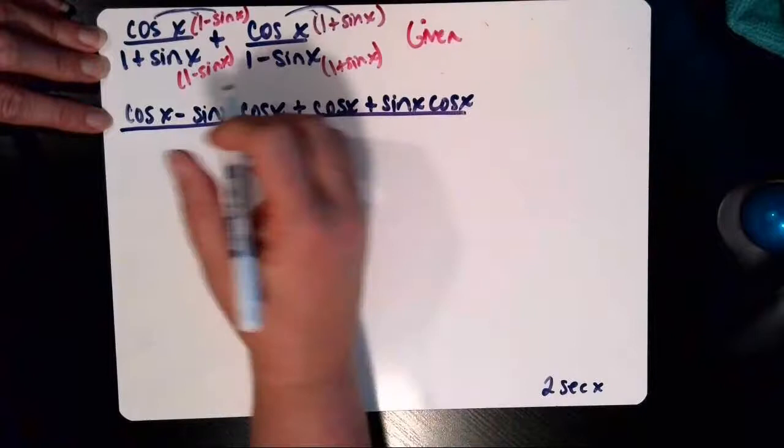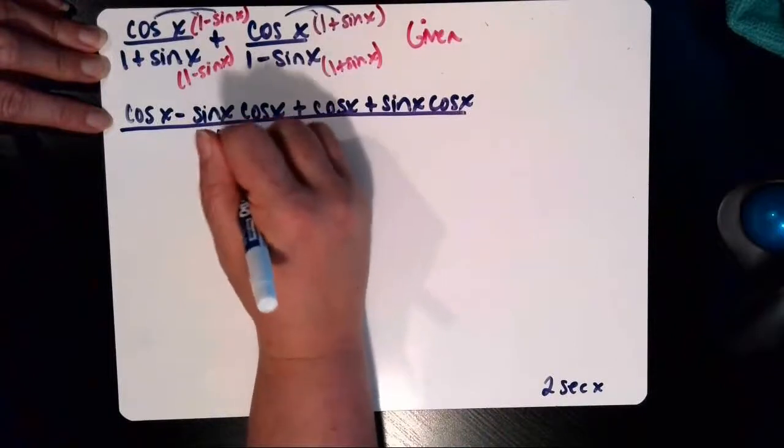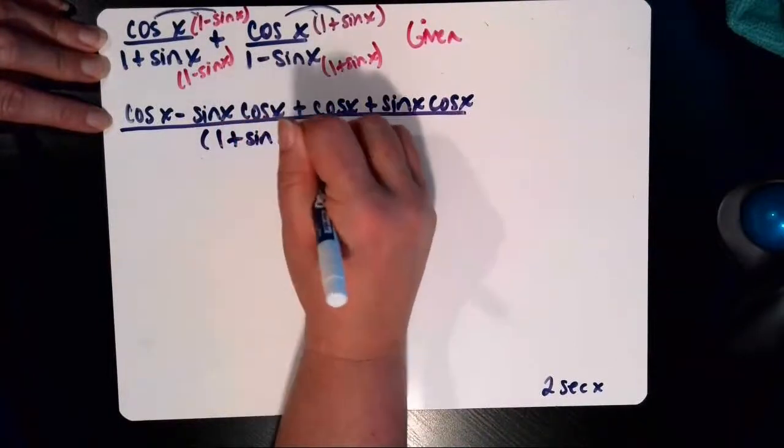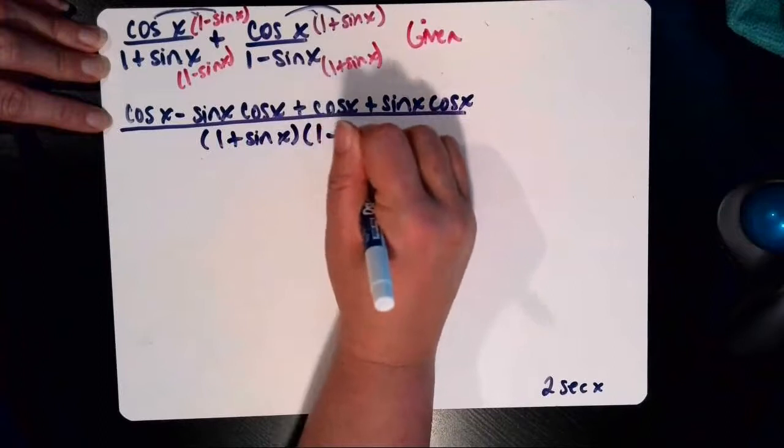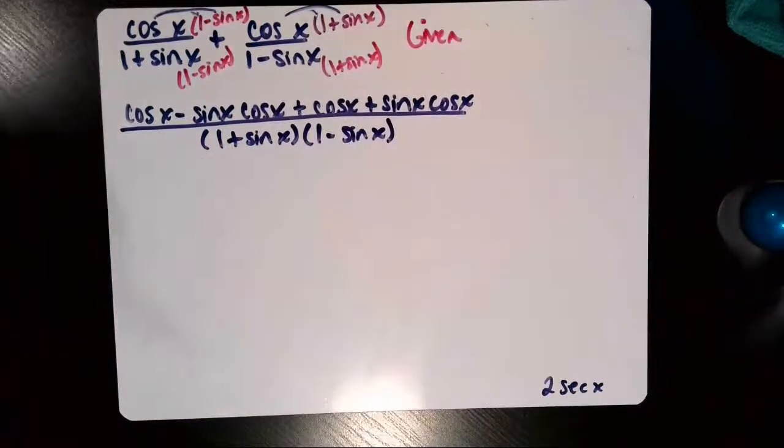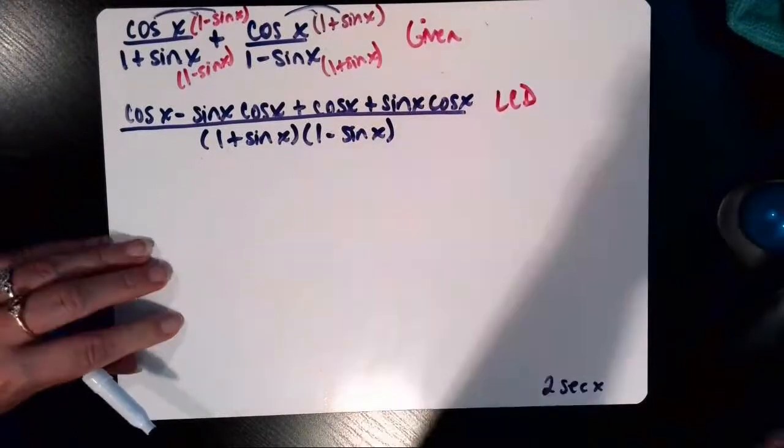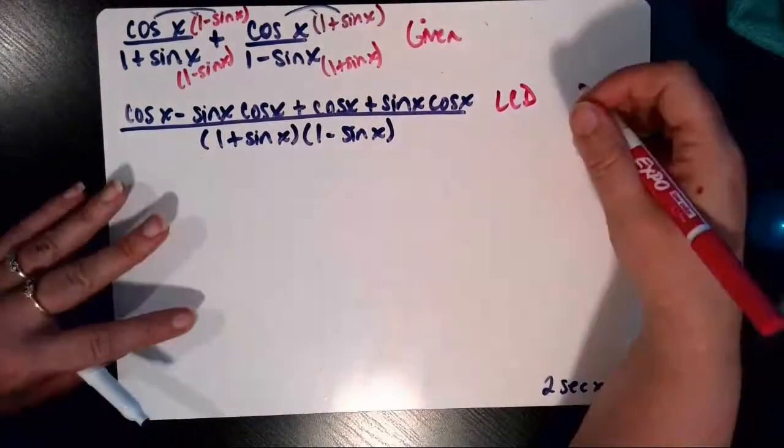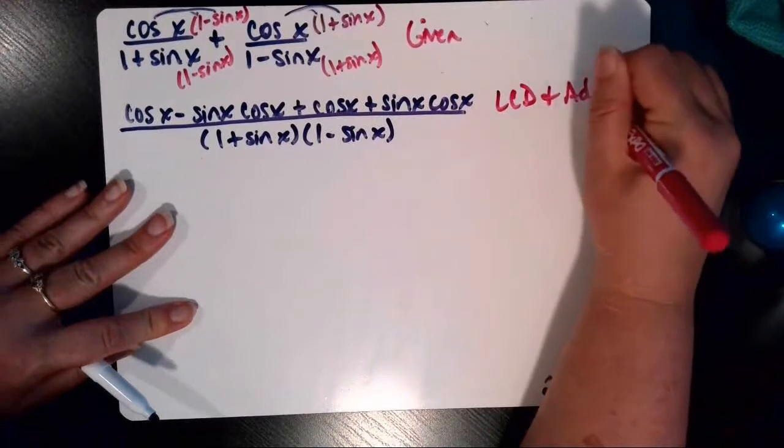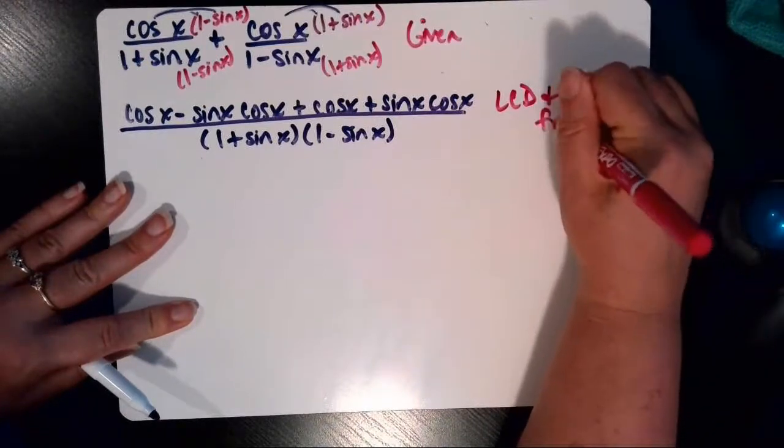And that's all over now my common denominator, 1 plus sine of x, 1 minus sine of x. And in that step, we found an LCD, a least common denominator, and we added the two fractions.